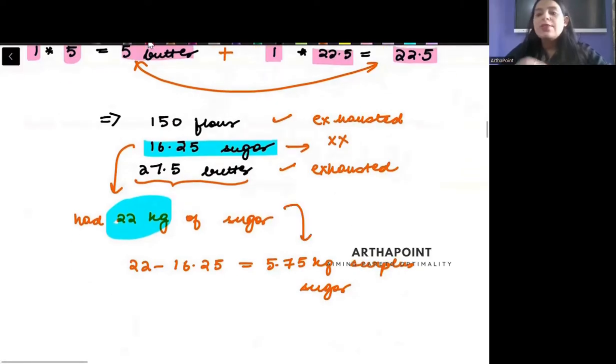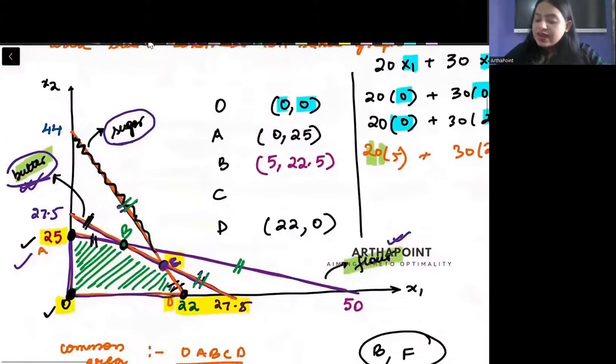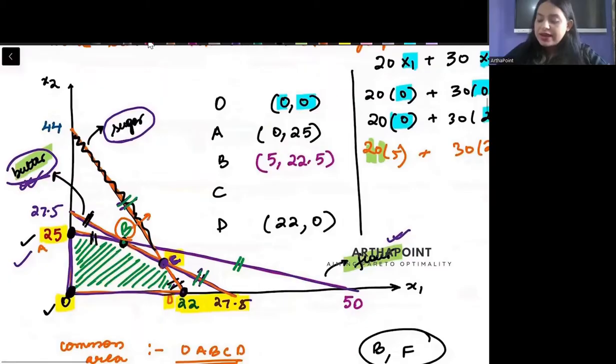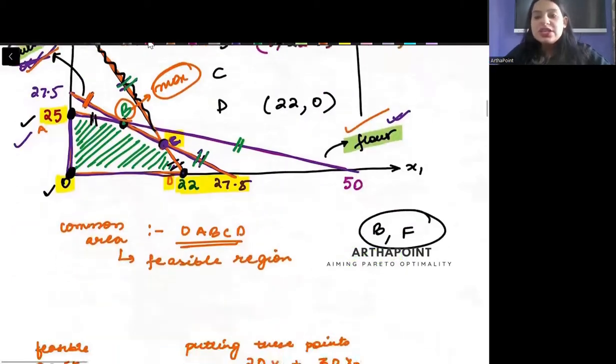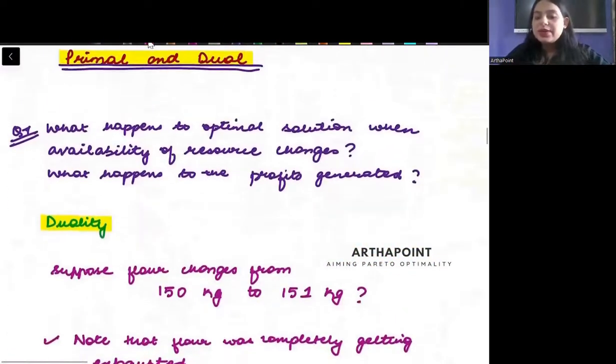So the sugar is not completely exhausted. I am left with some surplus sugar. I am not able to exhaust that completely. But I am exhausting the flour and the butter completely. And that is also shown through the same graph where I attain my maxima at point B. At B, the lines that are intersecting are that of butter and flour, so these two resources must be completely utilized.